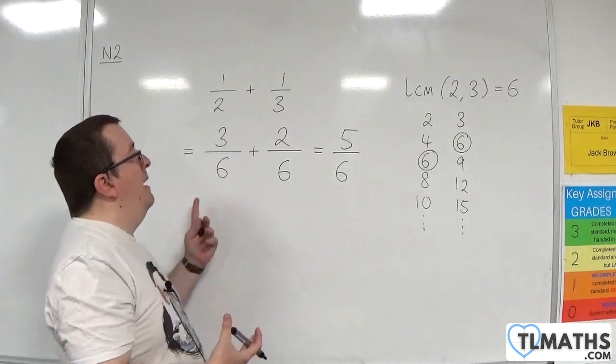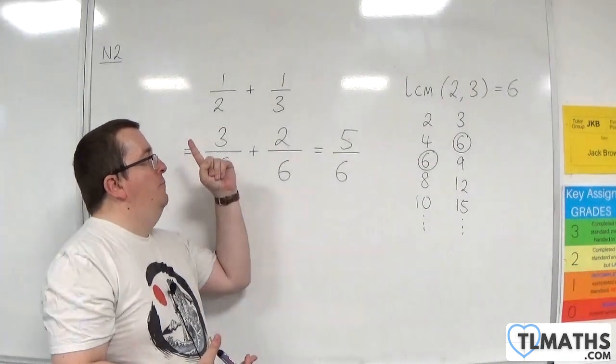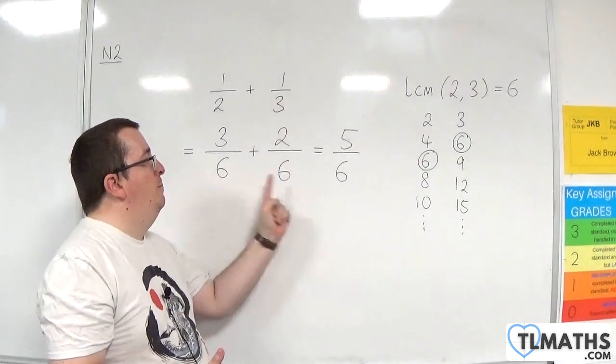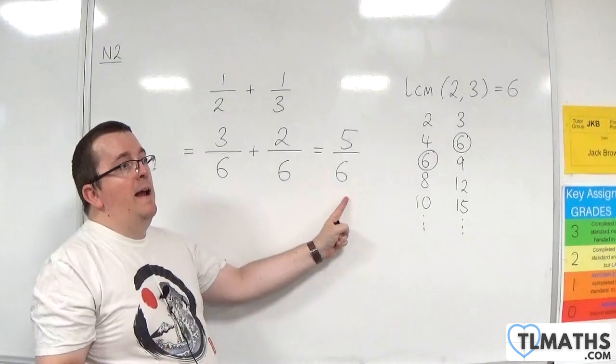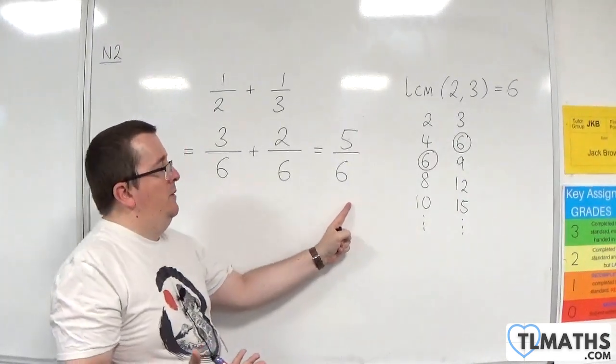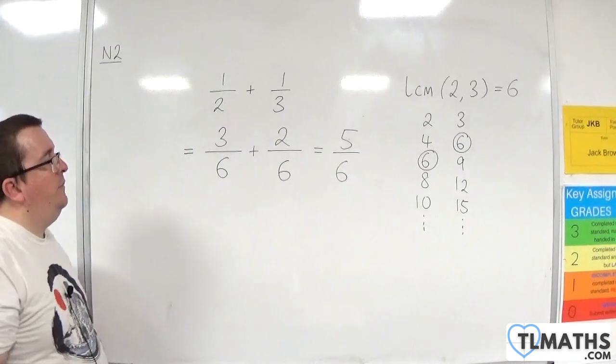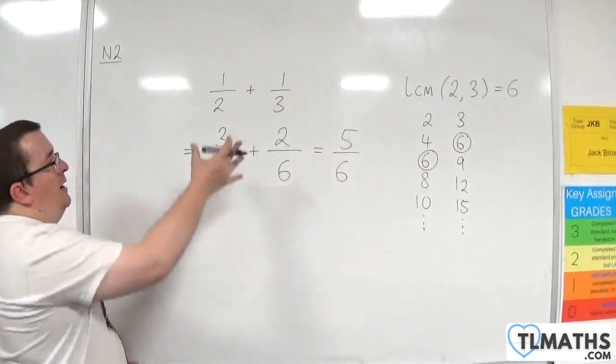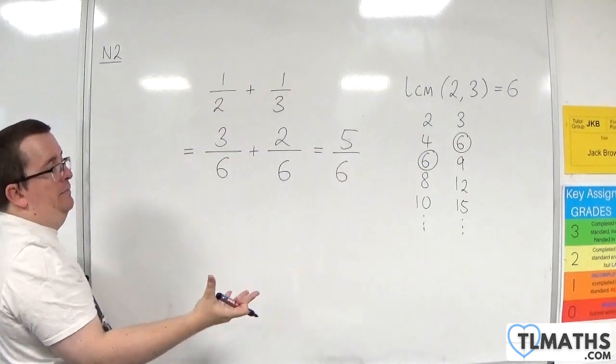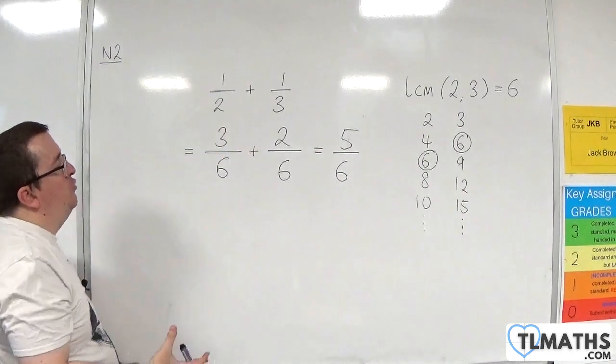So it won't always give you the most simplified form of the fraction. Whereas this method will give you the most simplified form based on that denominator, you may end up being able to simplify that one. But usually this gives you a better answer. So how do we do cross multiplication?